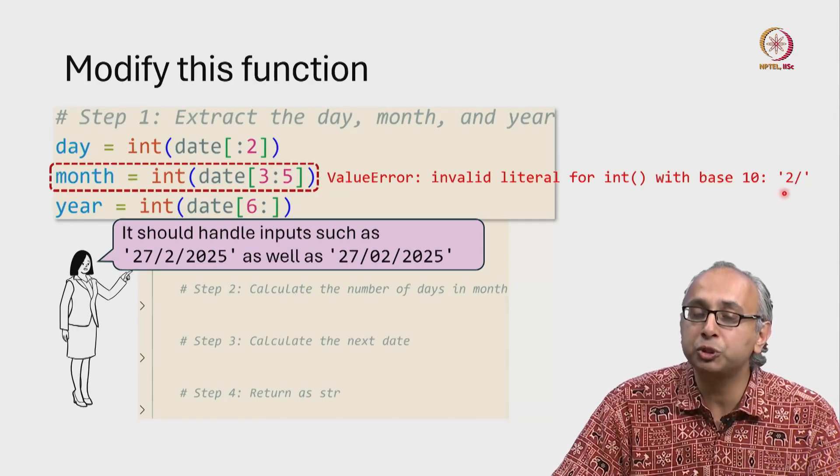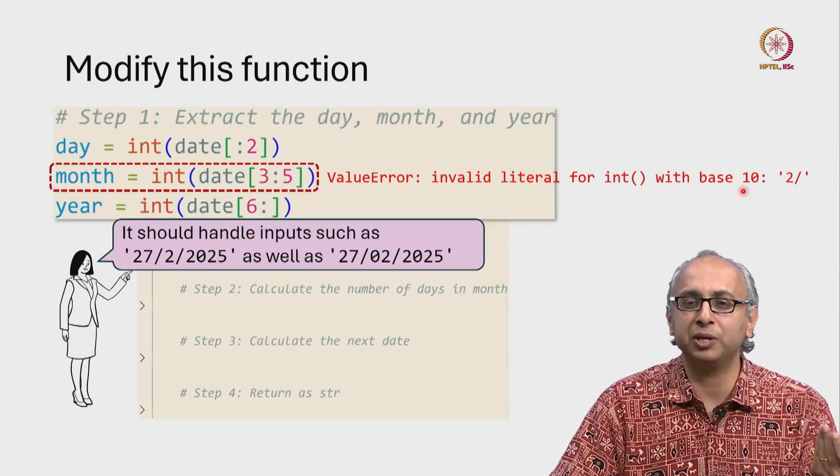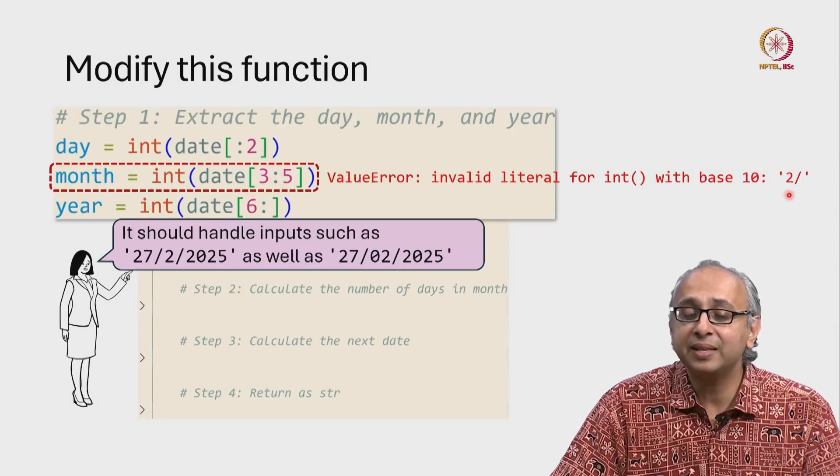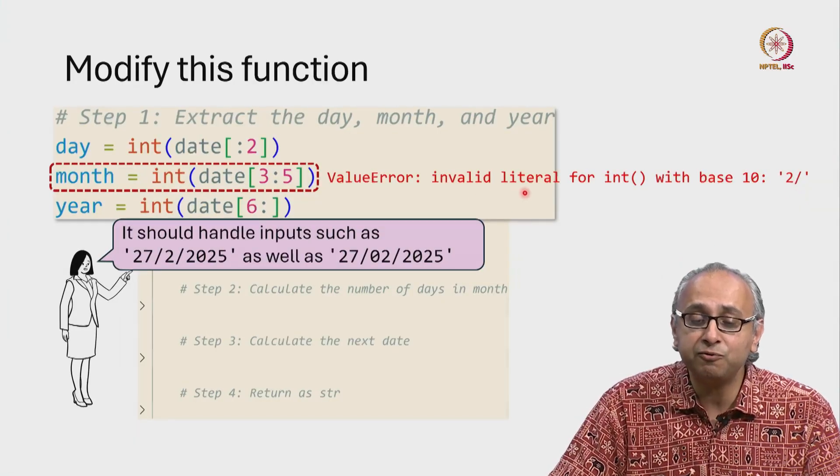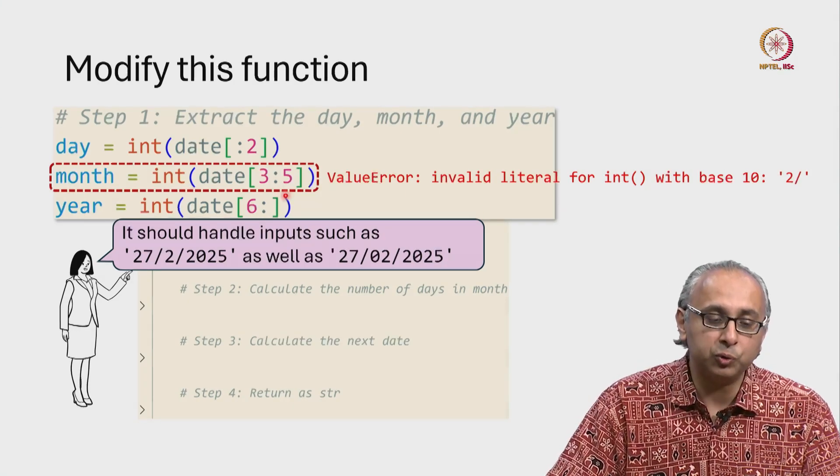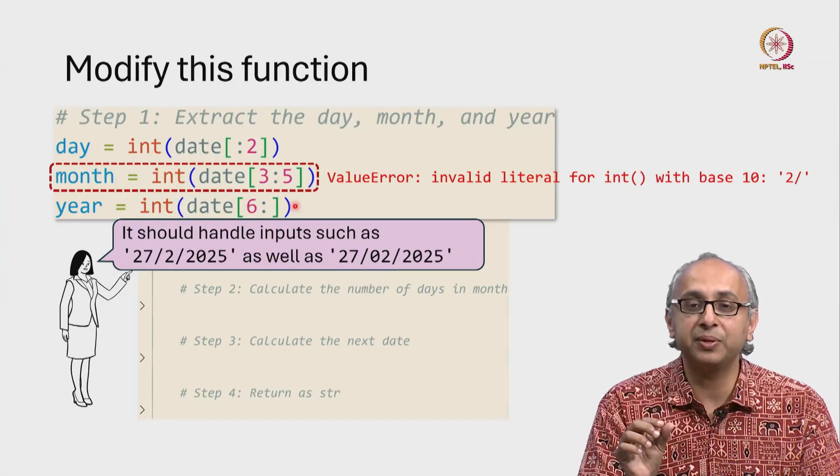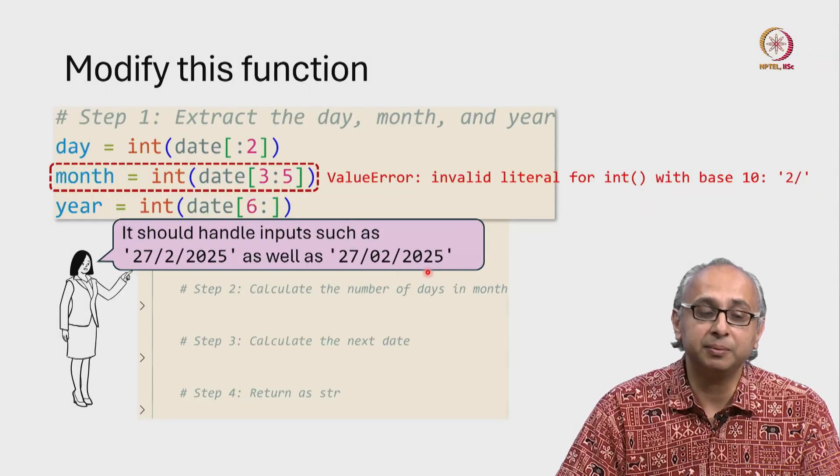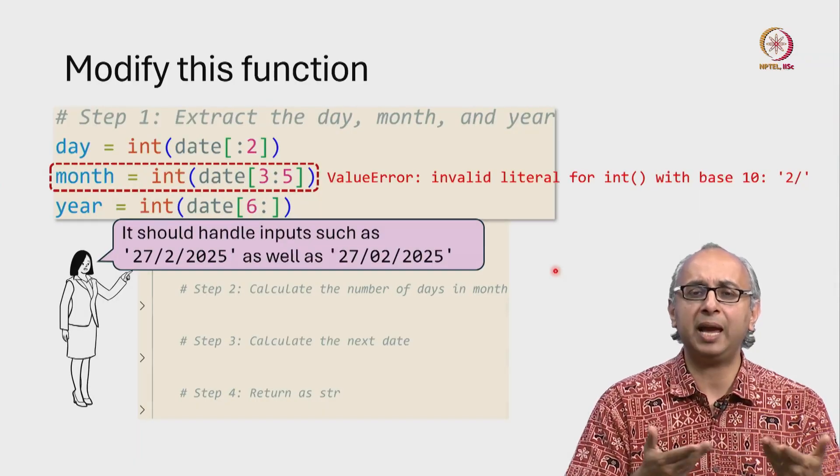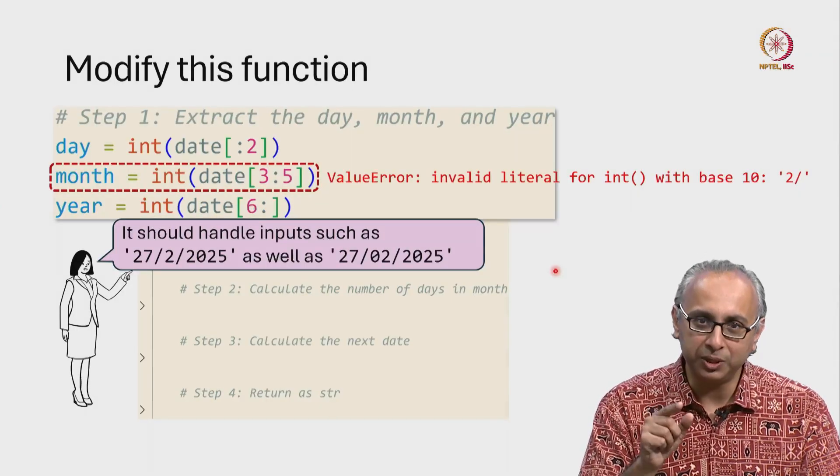It's saying I'm trying to convert this 2 slash into an int with base 10. It turns out you can convert strings into integers with different bases, but for now we are converting in base 10 and it's saying I can't convert this. It says it's an invalid literal 2 slash. So we see the problem. Our code is using fixed regions where it's expecting the day, the month, and the year. And sometimes that's correct but sometimes that's wrong. And our client wants this code to be robust. It should be able to handle all the types of inputs that her users are going to type into this code. So we need to make that change.